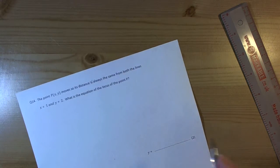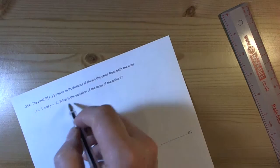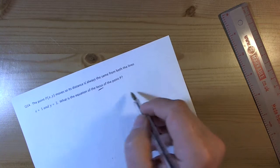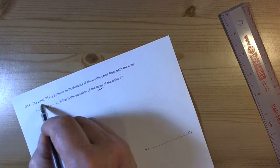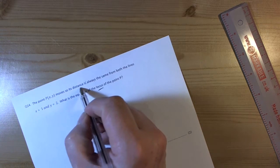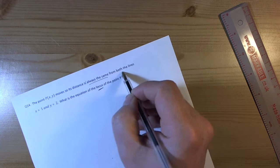Okay, so we've got a question here that talks about the locus, so that's the path of an object moving to given rules, and it's telling us that the point moves so the distance is always the same from both the lines.